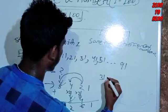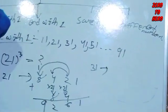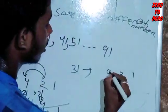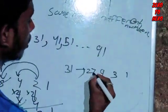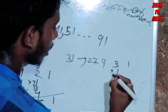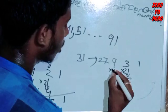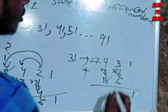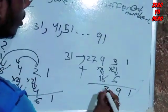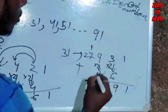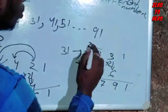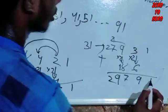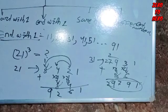For 31 cubed: the digit is 3. Three squared is 9, three cubed is 27. Multiply: 3 times 2 gives 6. Working through the steps — 9, 27, carrying digits — the answer is 29791.